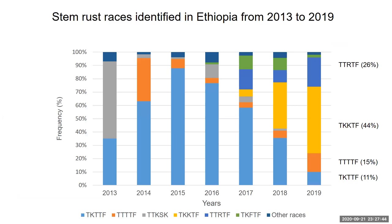Race analysis was conducted using the 20 North American differential lines as indicated in the table. Additional resistance genes were also used to further characterize the races. Moving on to the results: the bar chart indicates the races identified from 2013 to 2019. In those years, important changes were observed in stem rust races in Ethiopia. In 2013, race TTKSK, represented by gray color, was predominant. After 2014, race TKTTF, represented by light blue color, took over and became predominant, covering all the way to 2017.